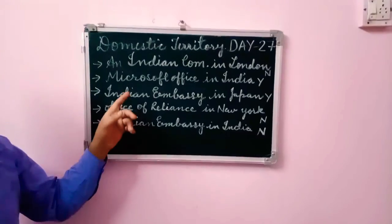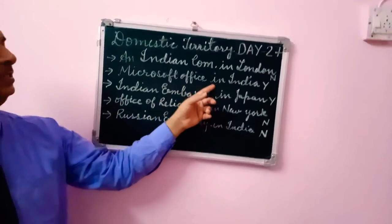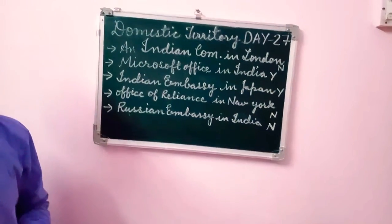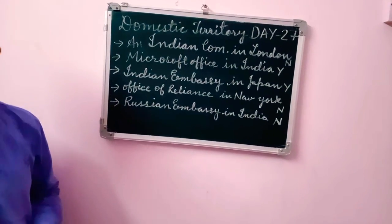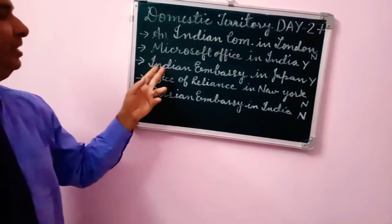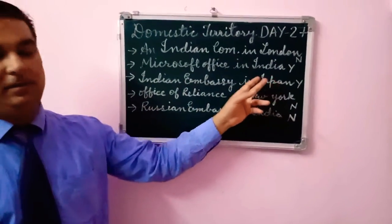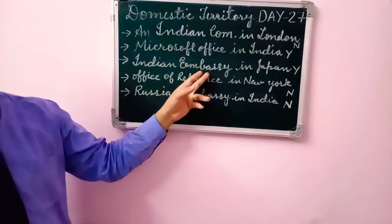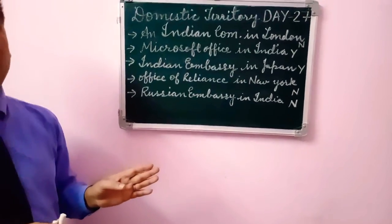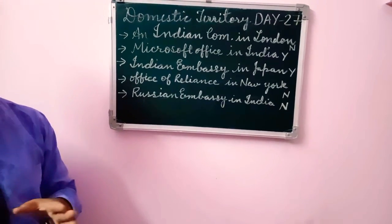Example two: Microsoft Office in India. Yes, it is included in the Domestic Territory of India because it operates within India. Example three: Indian Embassy in Japan. The Indian Embassy works for India, it is owned by India, and the owner and operations are also from India. So it is located in the Domestic Territory of India.